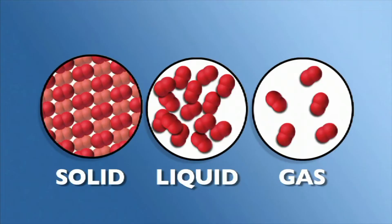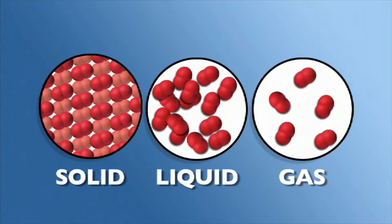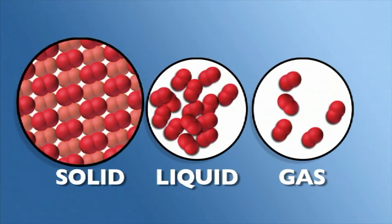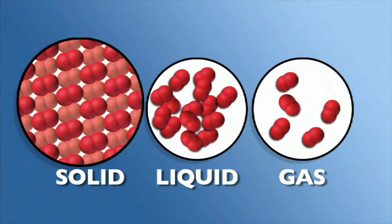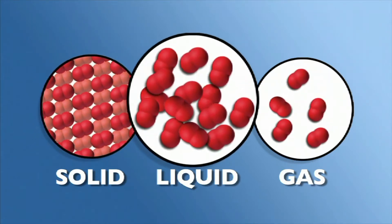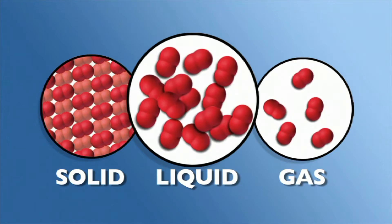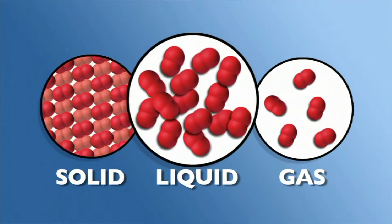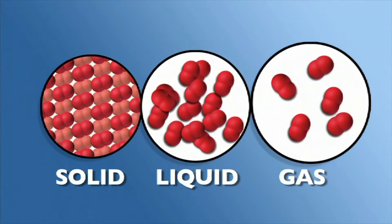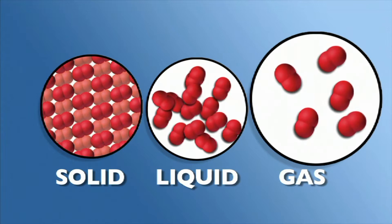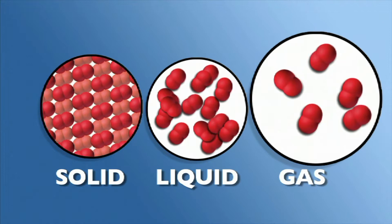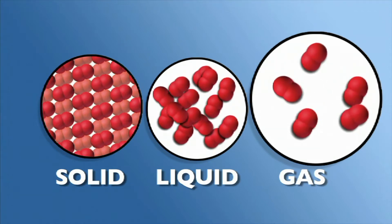The molecules, or matter, in any solid object are dense and grouped closely together. This density is why objects, like a baseball, are hard and firm. The molecules within a liquid are not as close as the matter within a solid. The matter in liquids is more flexible, allowing them the freedom to move and change shape. The molecules in a gas, like air, are spaced farther apart. They are not densely packed like they are in a solid.